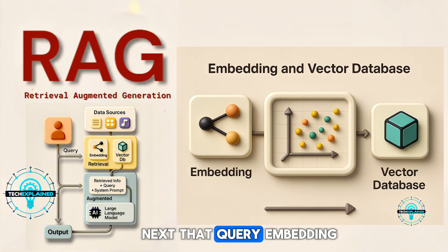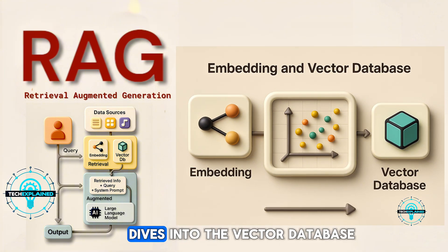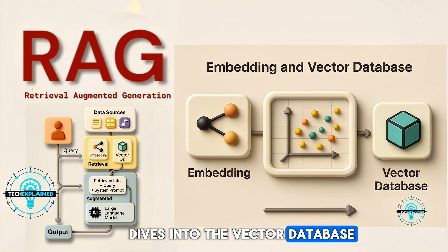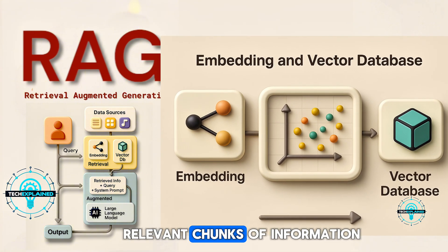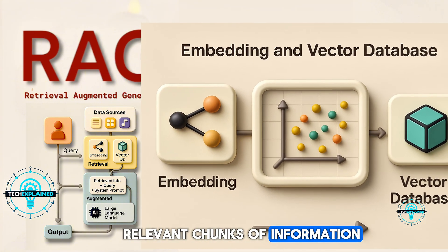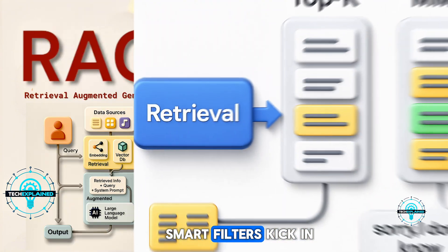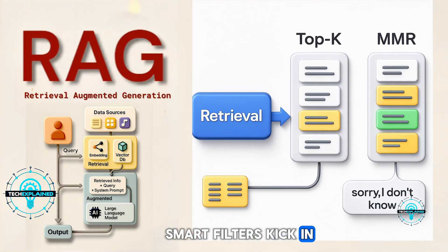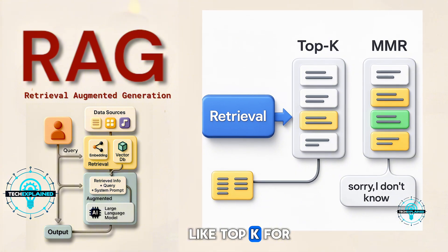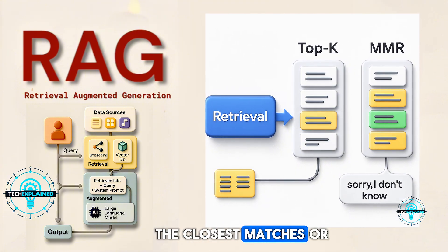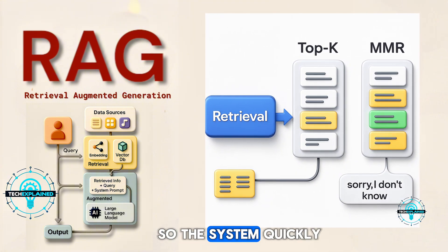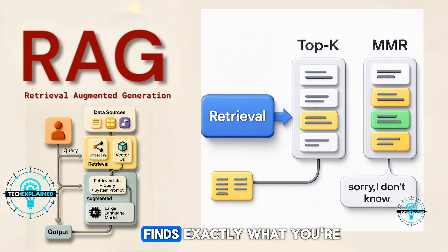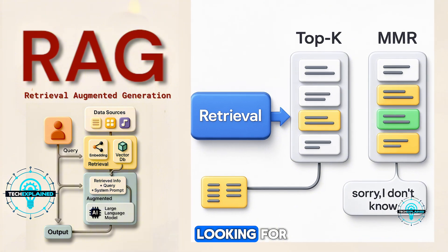Next, that query embedding dives into the vector database, hunting for the most relevant chunks of information. Smart filters kick in — like Top K for the closest matches, or MMR if variety is needed — so the system quickly finds exactly what you're looking for.